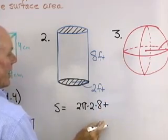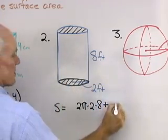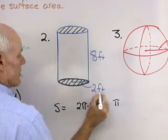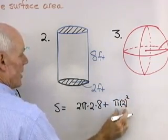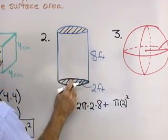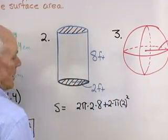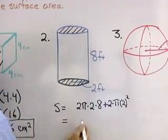Onto that, I want to add the surface area of the bottom here, which will just be π times the radius 2 squared, πr² for the surface area of that circle, and then I have the bottom and also the top, so I want to multiply that by 2.